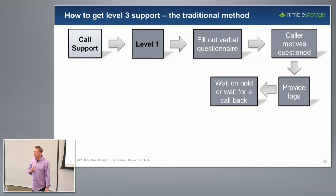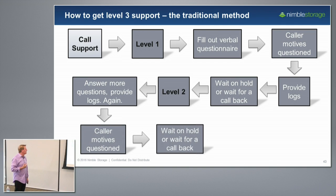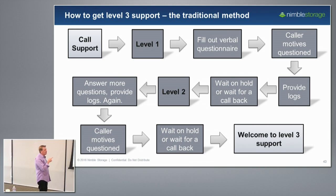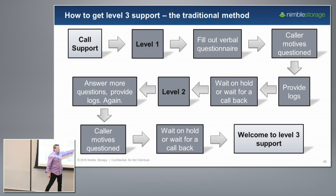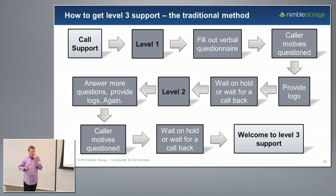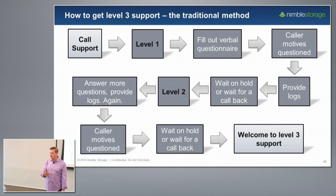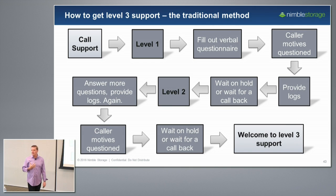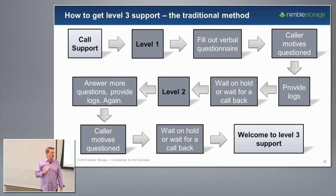One of the other key points is this level three support model. When you have level one and level two, there are usually several loops in the escalation process. We actually received an email from a customer several weeks back — they knew it wasn't a storage issue but had a case open with their server and networking provider for six weeks, with constant back-and-forth asking for more logs. They called us and we solved it that day. It was a downrev firmware on their Fibre Channel switch and some bad configuration settings — we fixed that while on the phone.